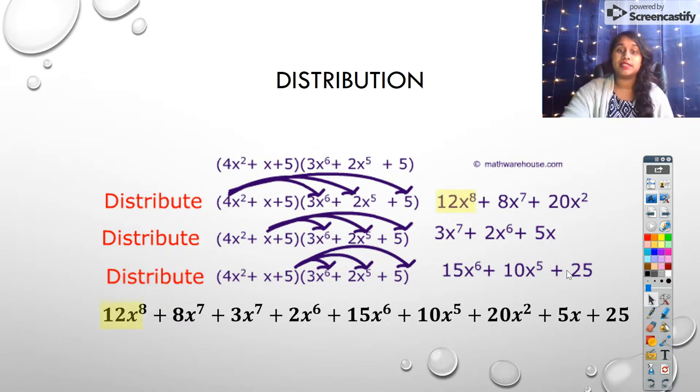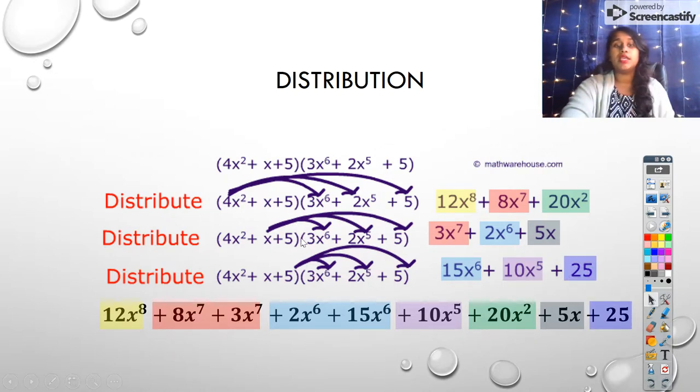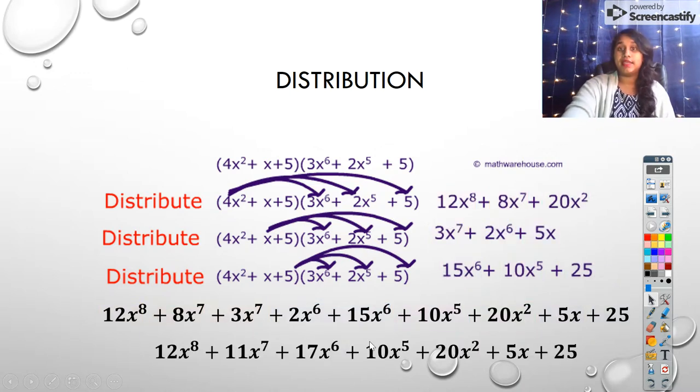But here I can combine again. My highest power is to the eighth, there's only one, so I'm good there. My next highest power is to the seventh, there's two. I can combine those. Then to the sixth, there's two. To the fifth, only one. Squared, only one. X, only one. And the constant is by itself. So I combine only the values that have multiples, and that's my end answer.